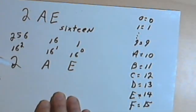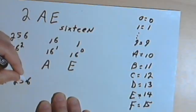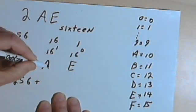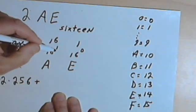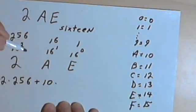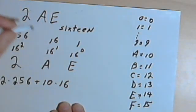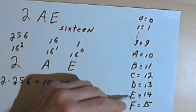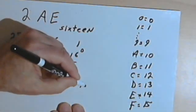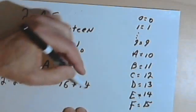So that 2 in the first column, in the 16 squared column, means I have 2 times 256. And the A in the 16 to the first column, let's see, A equals 10. So that means I have 10 times 16. And the E, which is 14, in the 16 to the zero column, means I have 14 times 1.